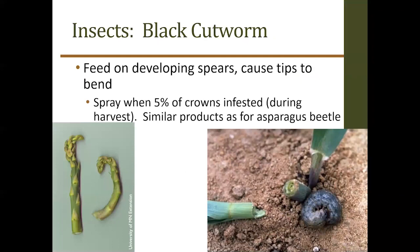Black cutworms can also be a problem. They cause typical twisting and curling of spears and can sometimes cut them off completely. Similar pyrethroid products apply here, with a treatment threshold of 5% of crowns infested during harvest. Note that other causes — mechanical injury, wind abrasion — can also cause similar twisting and curling, so proper scouting is important before making an application.